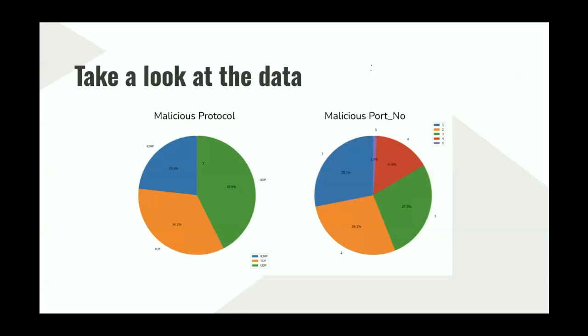Before looking at the model, let's first look at the data. As we can see from the pie chart visualization, there are lots of malicious packets from the UDP protocol. This is reasonable because of its lightweight feature, and DNS would be a perfect example of a UDP-based application attack. For the malicious port numbers, DDoS attacks are not limited to those five ports — those five ports were solely used to create the dataset and will be removed and not considered as features for the model.